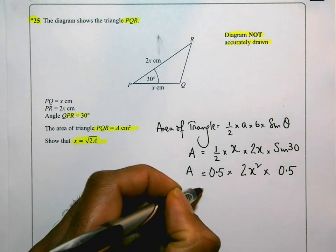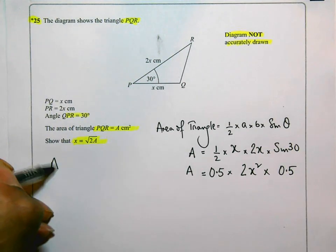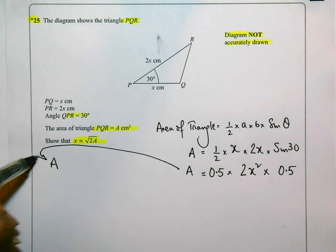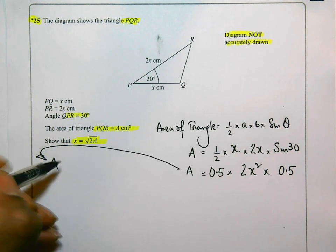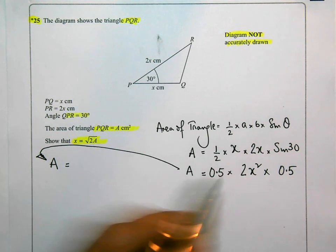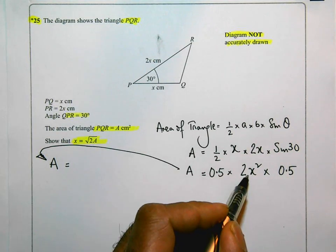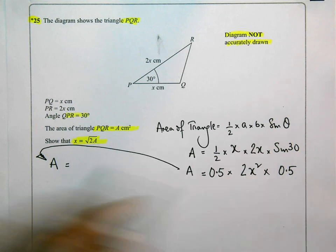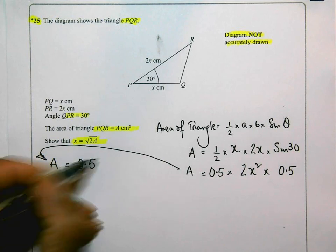So in other words, A. I'm going to just put an arrow here. A is going to equal half of 2 is 1. So I'll just get X squared. 1X squared times 0.5 is 0.5 X squared.